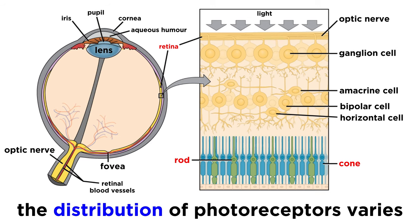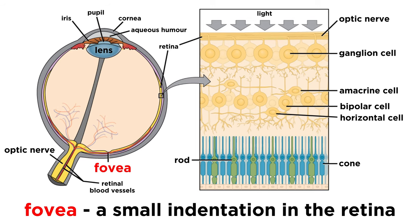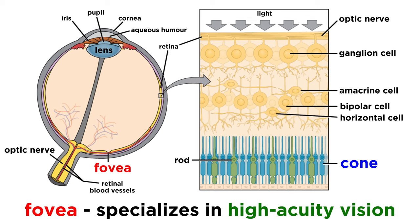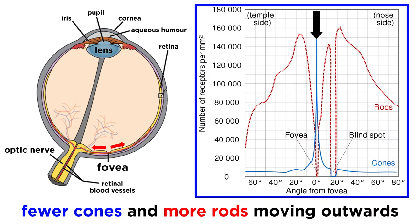In terms of the distribution of photoreceptors on the retina, we must be aware of the fovea. The fovea, which means pit in Latin, is a small indentation at the center of the retina, and there are no rods at all in the fovea — only cones. Because this region is all cones, this is the part of the retina that specializes in high acuity vision, meaning it can resolve small details. Moving out from the fovea, there are fewer cones and many more rods. The rods reach a maximum at 20 degrees away from the fovea on either side, and then begin to decline as well.